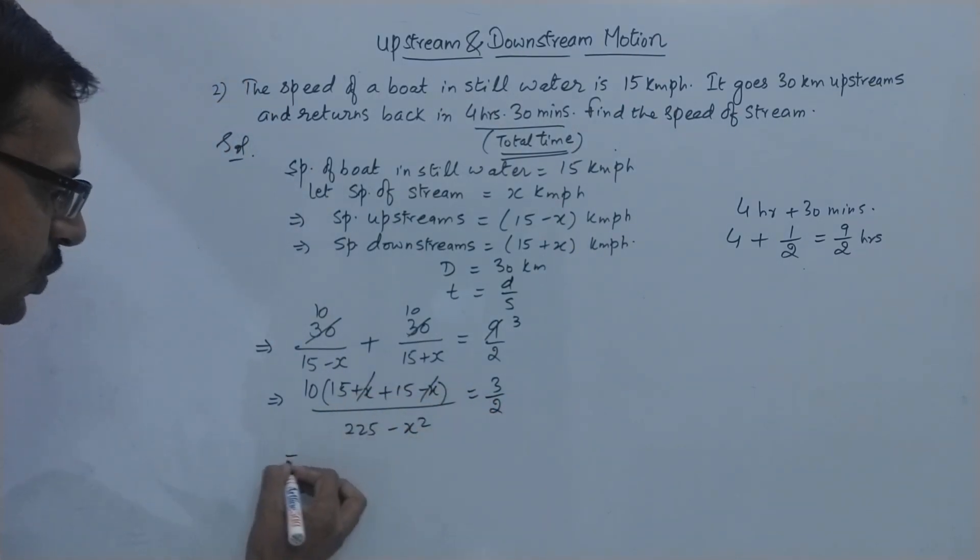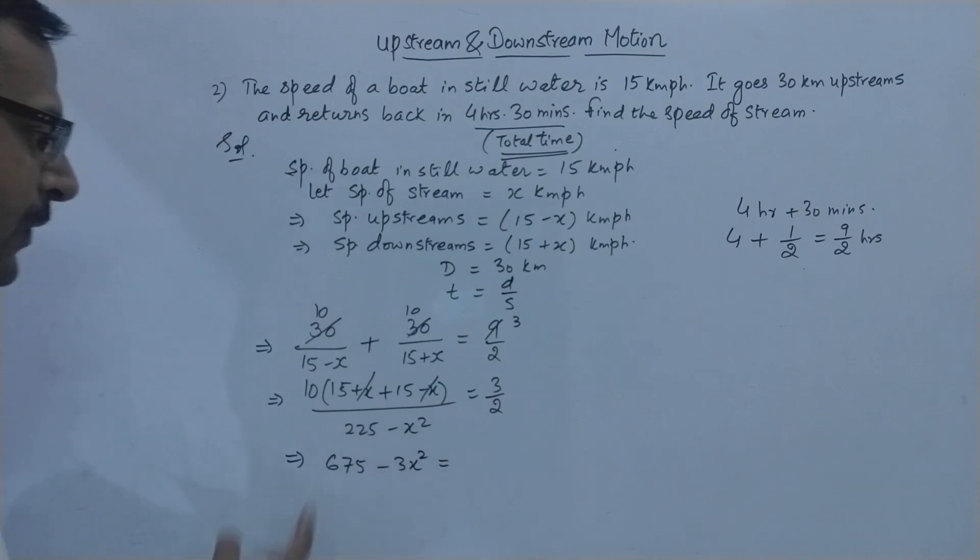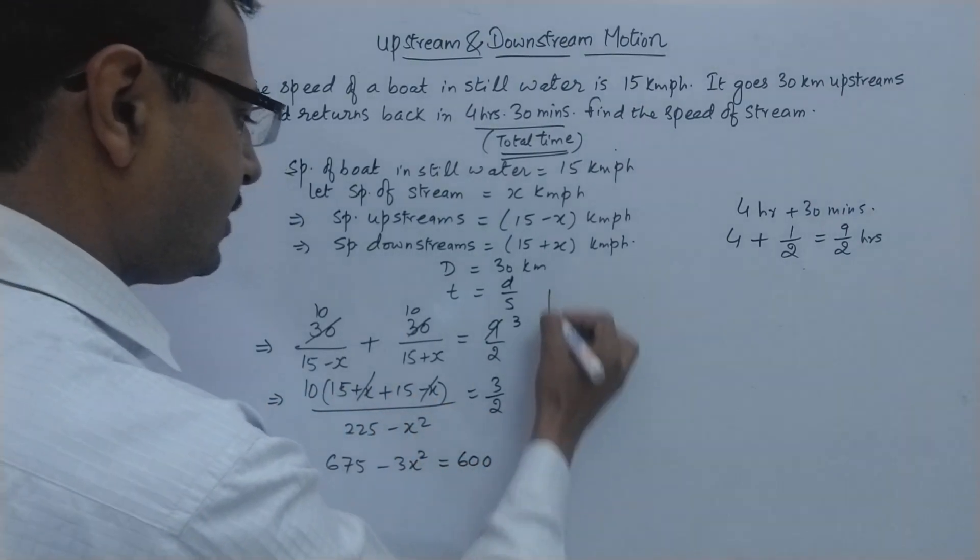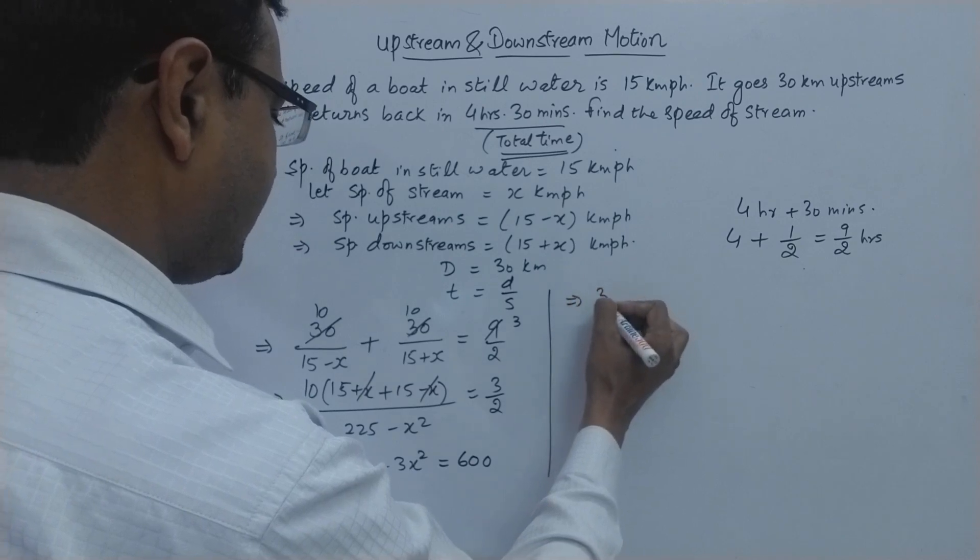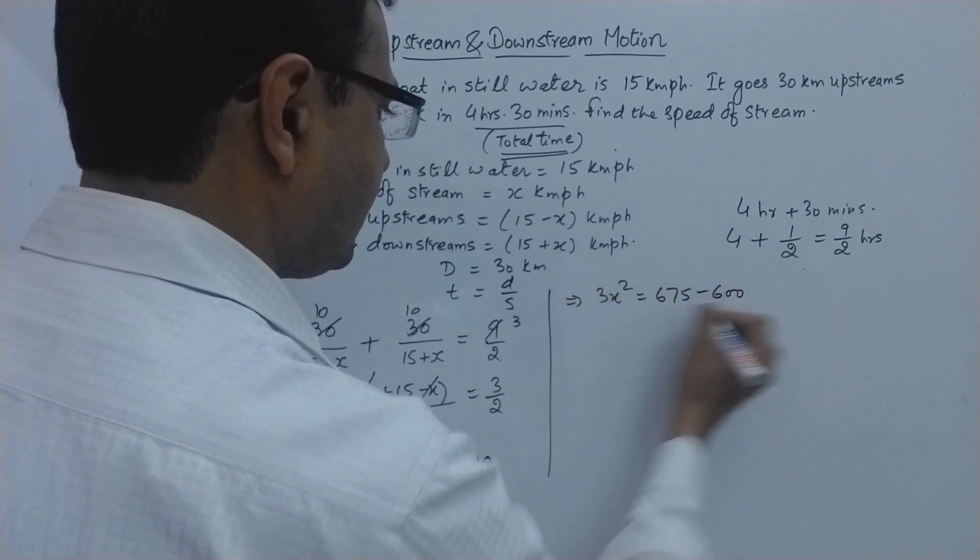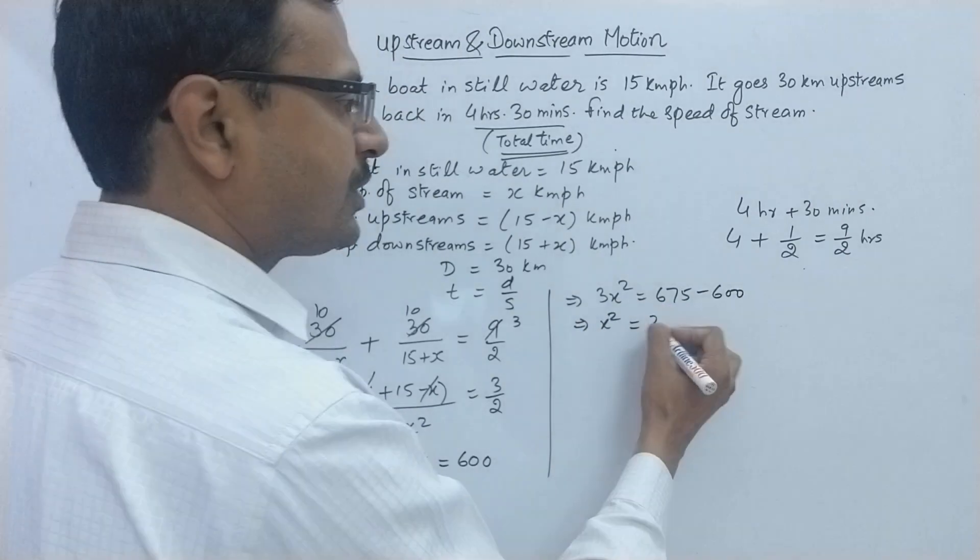So you can cross multiply this to get the equation. This is 675 minus 3x square equal to, okay, this is 15 into 15 plus 15 is 30, 300, 300 into 2 is 600. So very simple equation here.